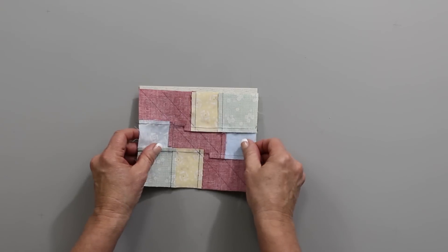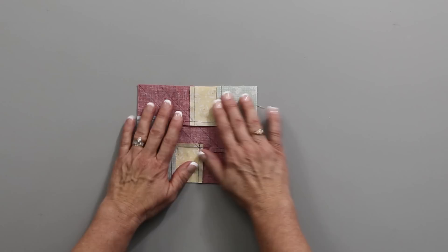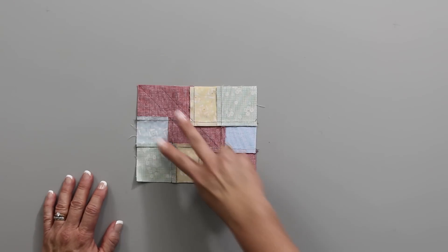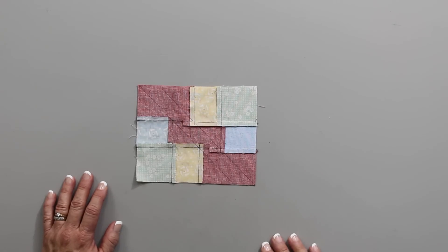Once you have your pieced rectangle pressed and marked, you're going to team it up right sides together with an un-pieced rectangle. The size of this is also on the chart. And you're going to line that up face to face, right sides together, and you're actually going to go ahead and stitch on those two lines.